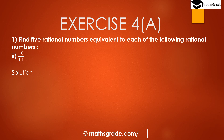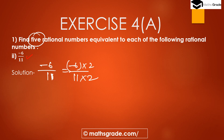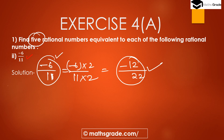Question 1, second part: minus 6 divided by 11. We have to find the 5 equivalent rational numbers of -6/11. First, multiplying both numerator and denominator by 2: -6×2 = -12 and 11×2 = 22, giving -12/22 as the first equivalent rational number.